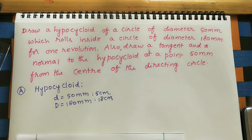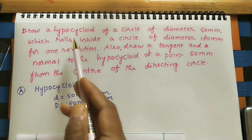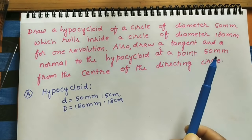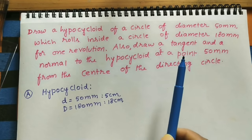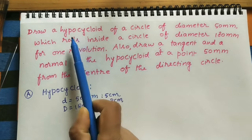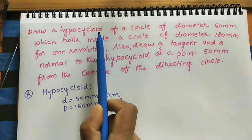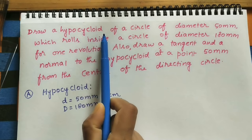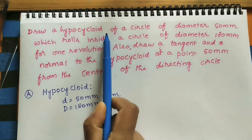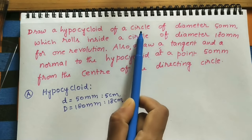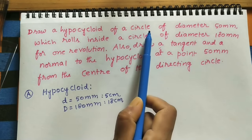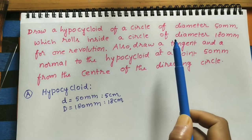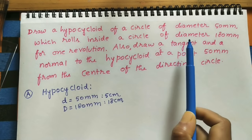Hi to all. Today we will discuss how to draw a hypocycloid. I took one textbook question here. Before doing this, let us understand what a hypocycloid is. A hypocycloid means it is the path of one point P, which is on the circumference of the smaller circle when the smaller circle is rotating inside a bigger circle.